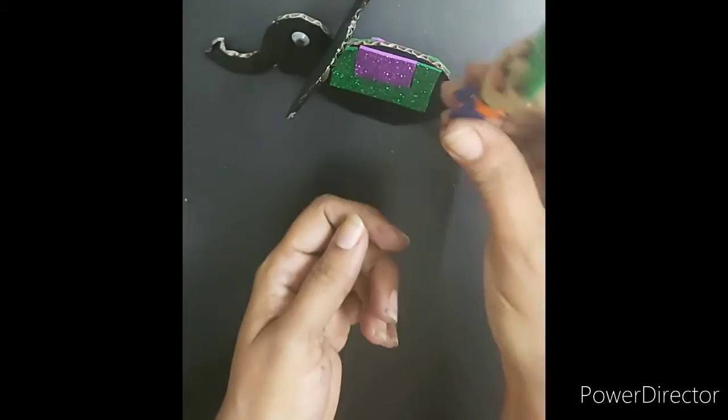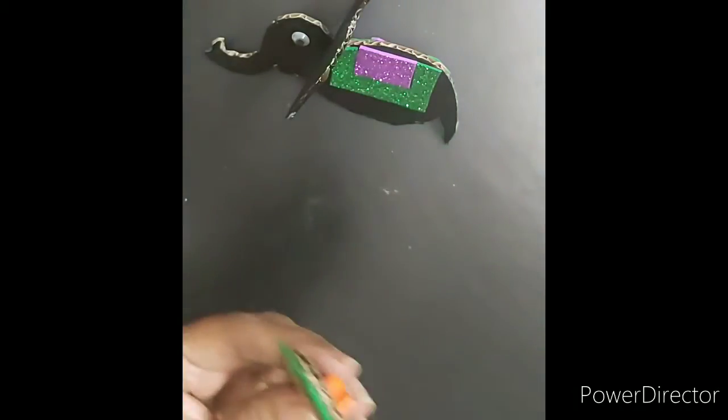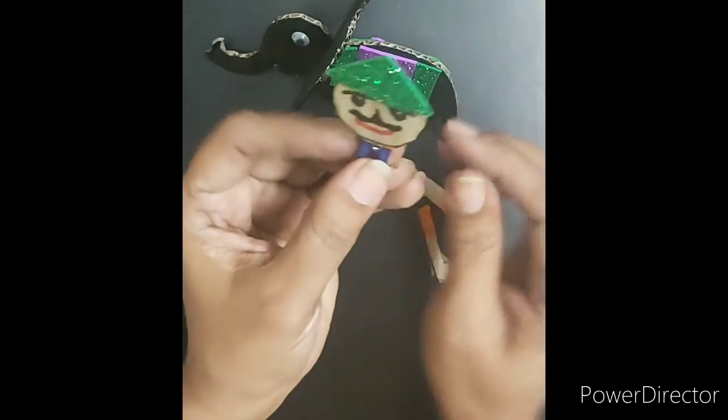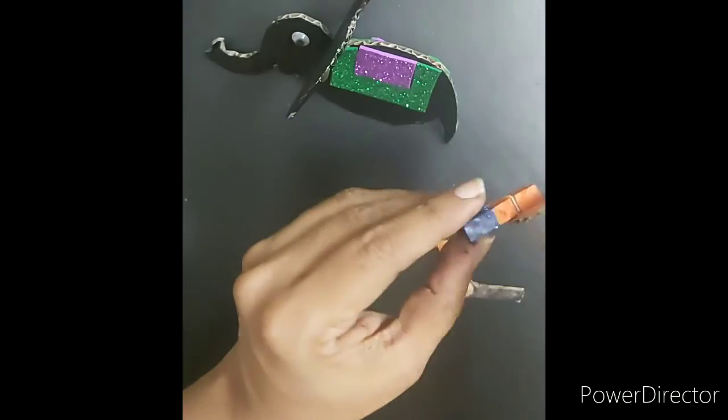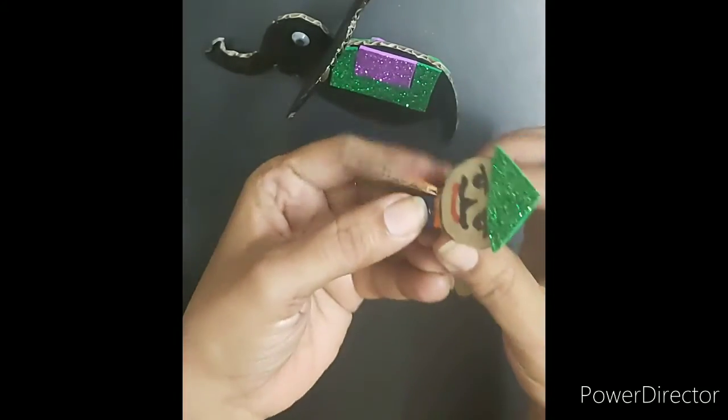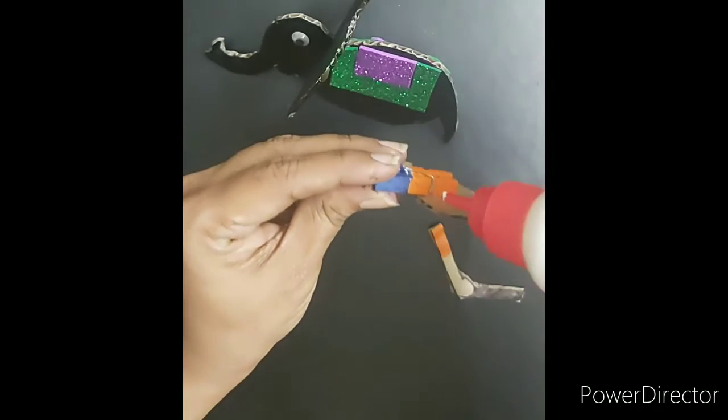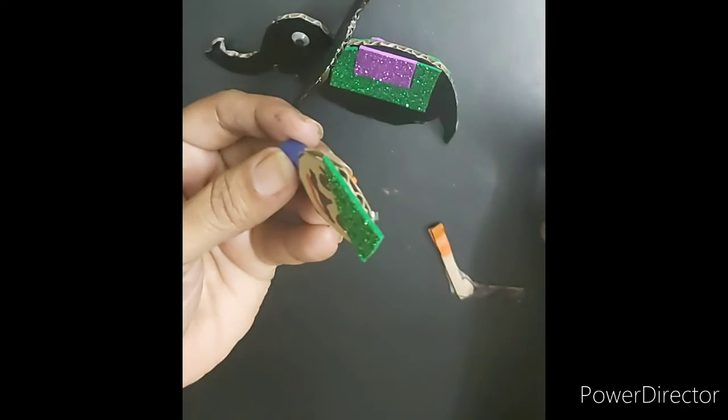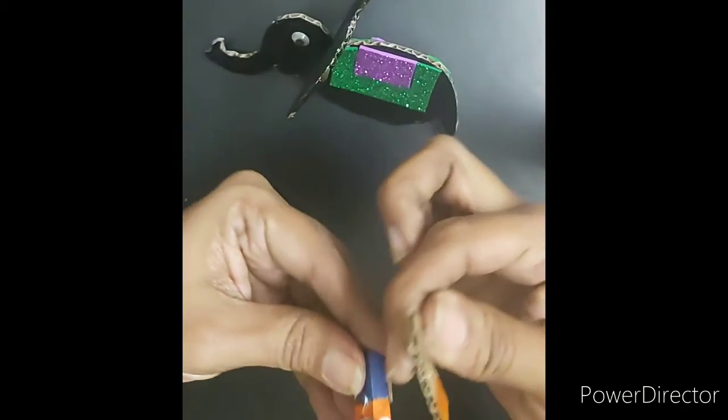We need to attach the hands and the person to the elephant. So now first we will attach one of the arms which does not have the stick over here. Add some glue here and attach the arm here.